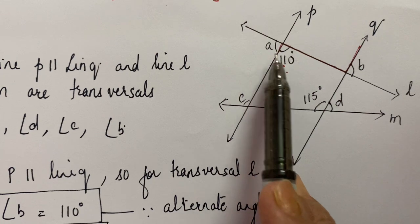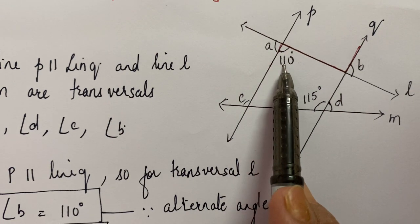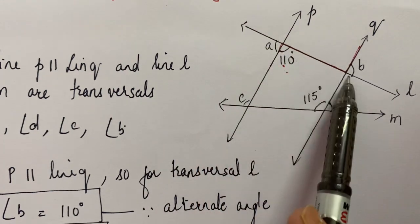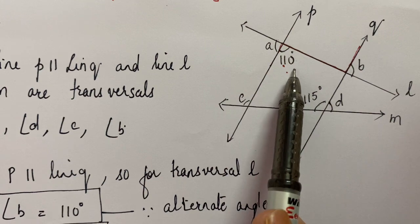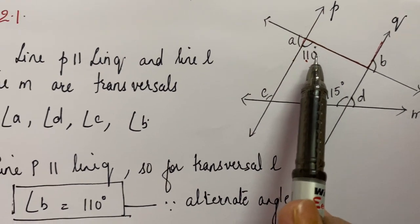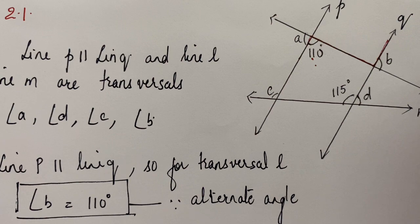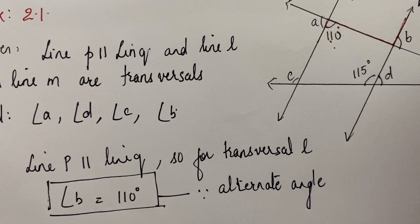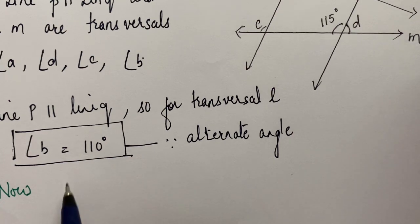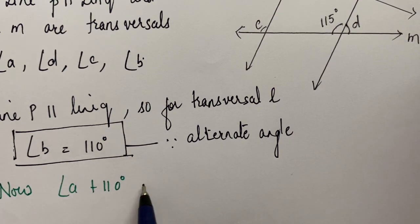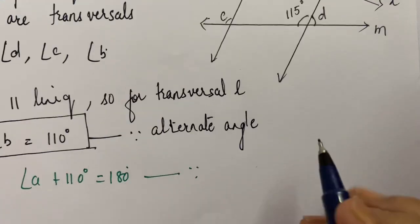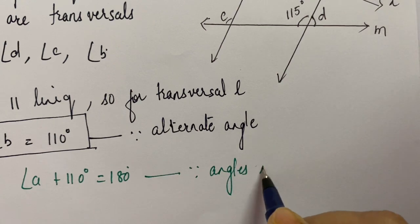Now, if you have a look at angle A and 110°, they are angles in a linear pair — they have a common arm and their non-common arms form opposite rays. So angle A and 110° are angles in a linear pair. We make use of this property: angles in a linear pair have a sum of 180°. So, angle A plus 110° is equal to 180°. Reason: angles in a linear pair.